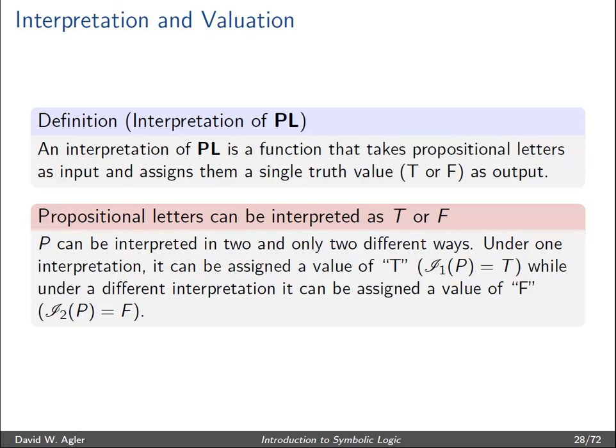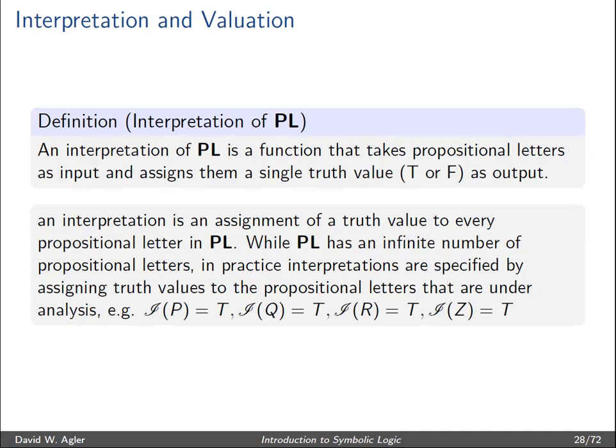Propositional letters can be interpreted in one of two ways: a single propositional letter can be interpreted as true, and under a different interpretation it can be interpreted as false. So if we had a different interpretation, say i-sub-two, then p could potentially be false. It's important to realize that an interpretation is an assignment of truth values to every propositional letter under analysis. When analyzing an argument, we indicate interpretations by writing i(p) = true, i(q) = true, and so forth.